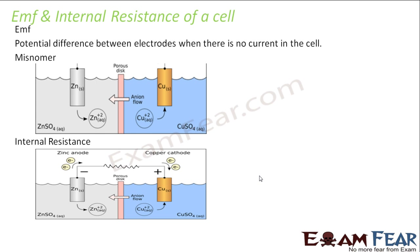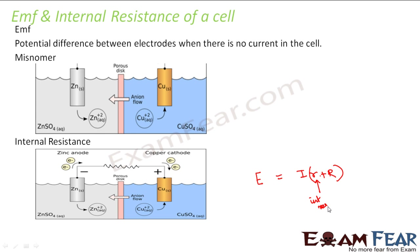If E denotes the EMF of the cell, we can say that E is equal to I into (R + r). Small r always denotes the internal resistance of the cell, and capital R is the external resistance in the circuit. If this battery or cell is connected to a circuit with an external resistance capital R, and some current flows through the circuit, we say EMF is equal to I into (small r + capital R).